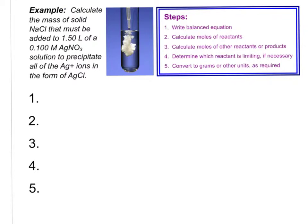Let's look at our first example. Calculate the mass of solid sodium chloride that must be added to 1.5 liters of a 0.100 molar silver nitrate solution to precipitate all of the silver ions in the form of silver chloride. Two things are obviously different here: we're going to be talking about ions that are dissociated in solution, and we're also going to be talking about molarity — two concepts we're incorporating into the stoichiometry calculations.